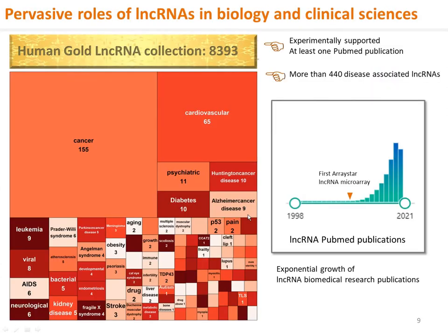Almost ignored as junk RNAs in the past, lncRNAs are now known to play pervasive roles in biology and disease. Already, more than 8,000 human lncRNAs have been experimentally supported and described by at least one publication. There are more than 440 lncRNAs associated with diseases, and we have observed exponential growth of lncRNA research publications in recent years. ArrayStar's first lncRNA microarray was introduced in 2009.